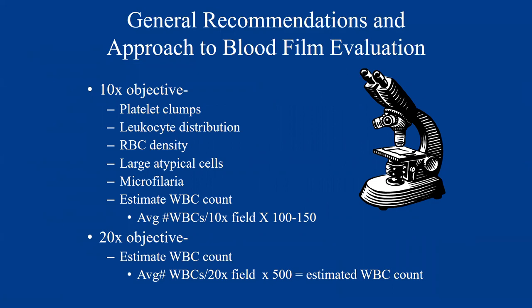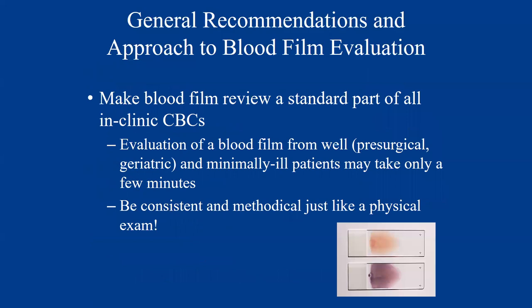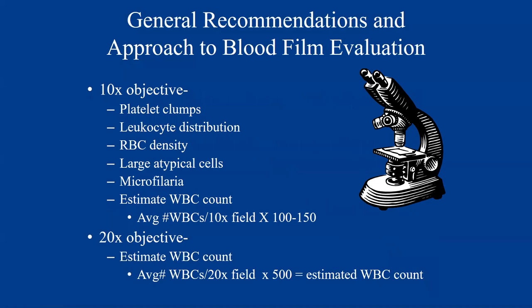When actually approaching the blood film, you want to make sure you do your evaluation in the monolayer, which is generally the area where about 50% of cells are about to touch but not overlapping. If you're at the feathered edge, you can get some disruption. If you go into the body, everything just clumps. There are still diagnostically relevant things to find at the feathered edge and body, but morphologic identification occurs in the monolayer of the slide.